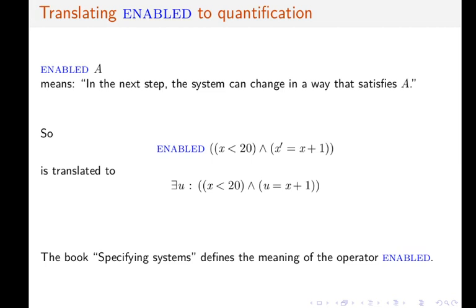Firstly, let's talk about the translation from ENABLED to quantification. ENABLED of a formula A means roughly that in the next step, the system can change in a way that satisfies the formula A.